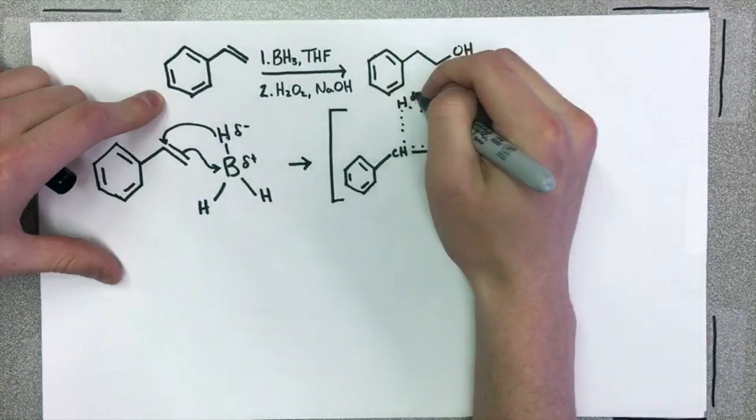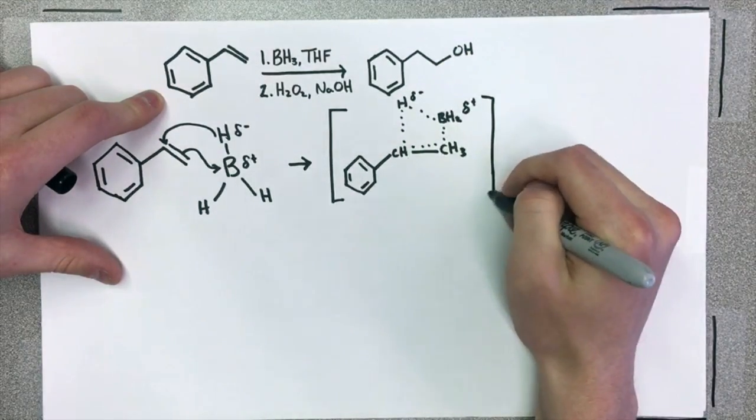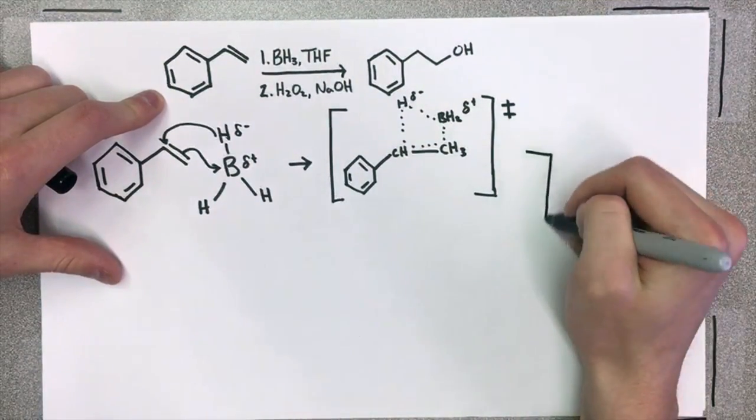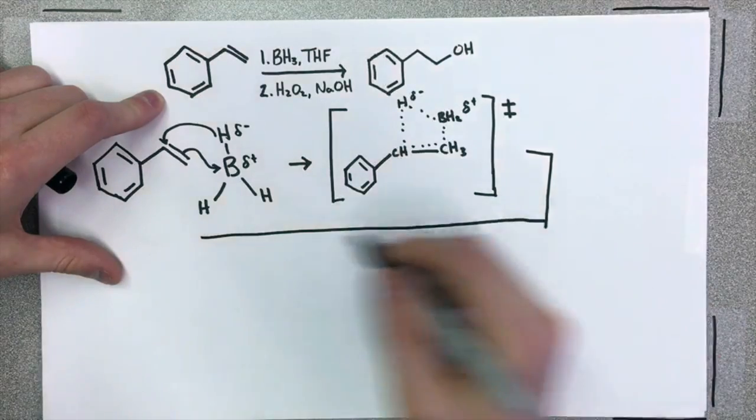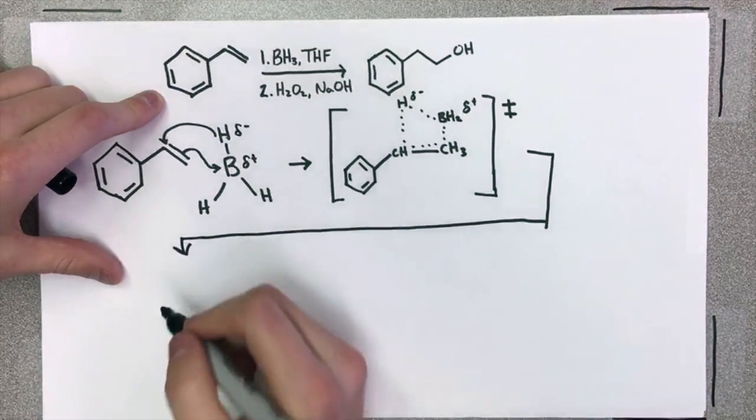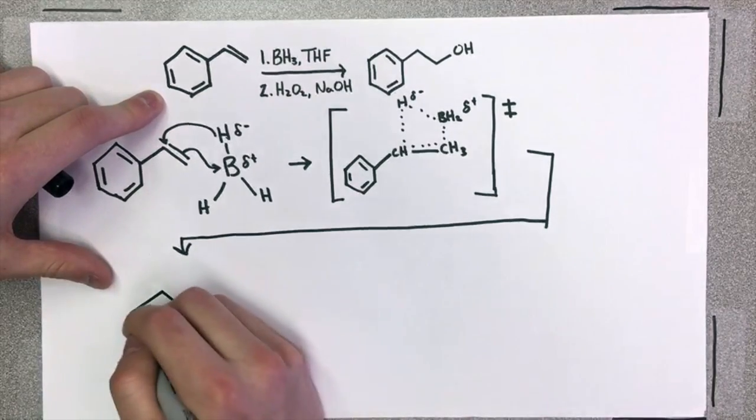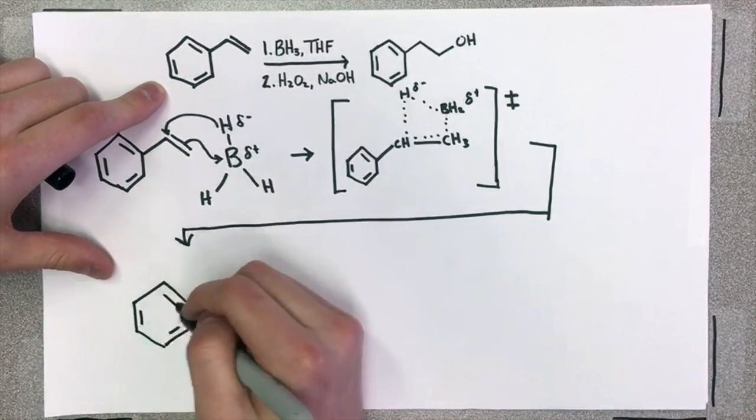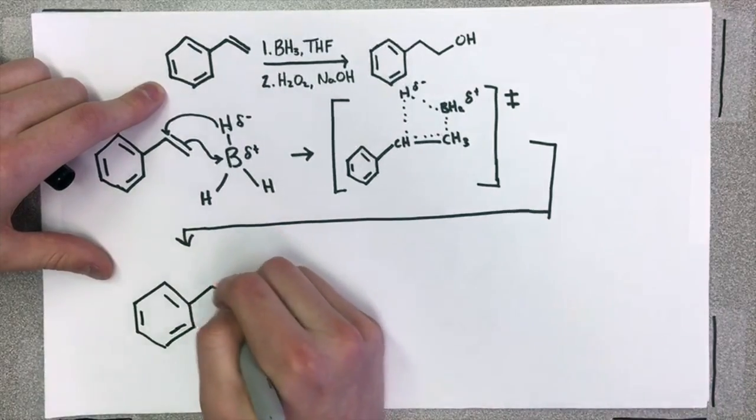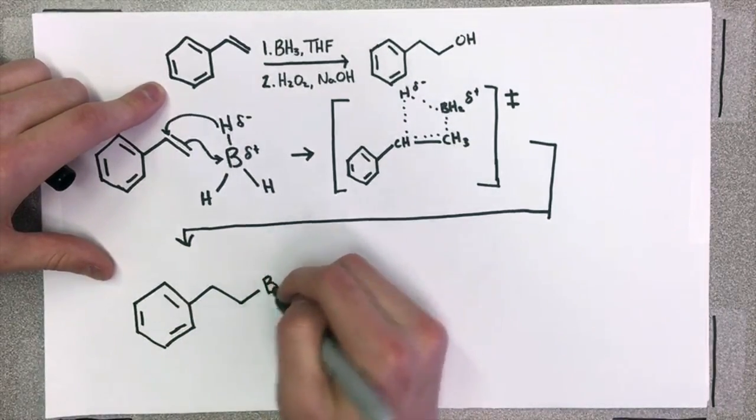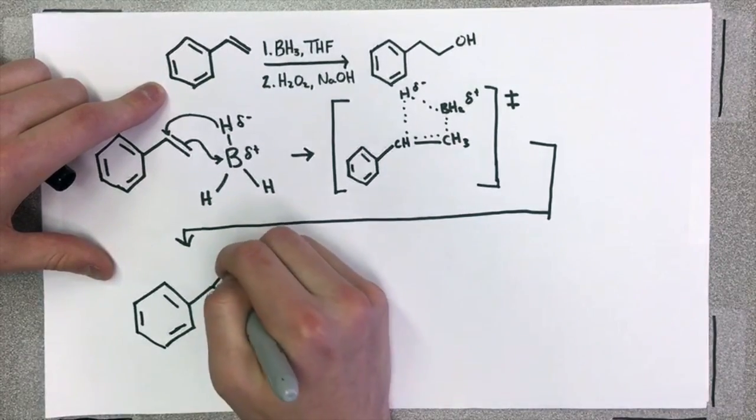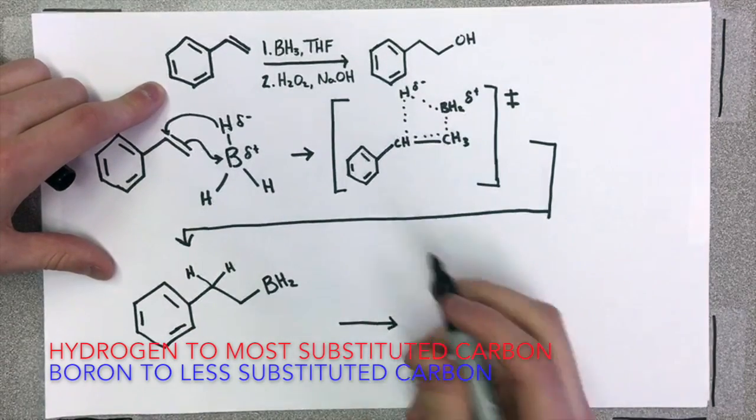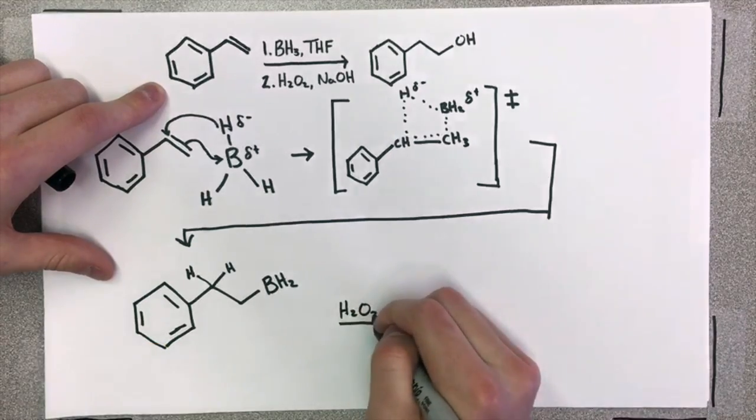So, the reason that this adds anti-Markovnikov is because whenever the pi bond attacks boron, it has to decide which carbon to leave with a partial positive, a brief partial positive charge. And since the secondary carbon is going to be more stable as a partial positive charge, the boron is actually going to add to the primary carbon, or the delta negative hydrogen is going to attack the partially positive carbon, and in this case, and in most cases, that is the secondary carbon. So, that's why it adds anti-Markovnikov. You end up with a BH2 group on the primary carbon instead of the secondary carbon.